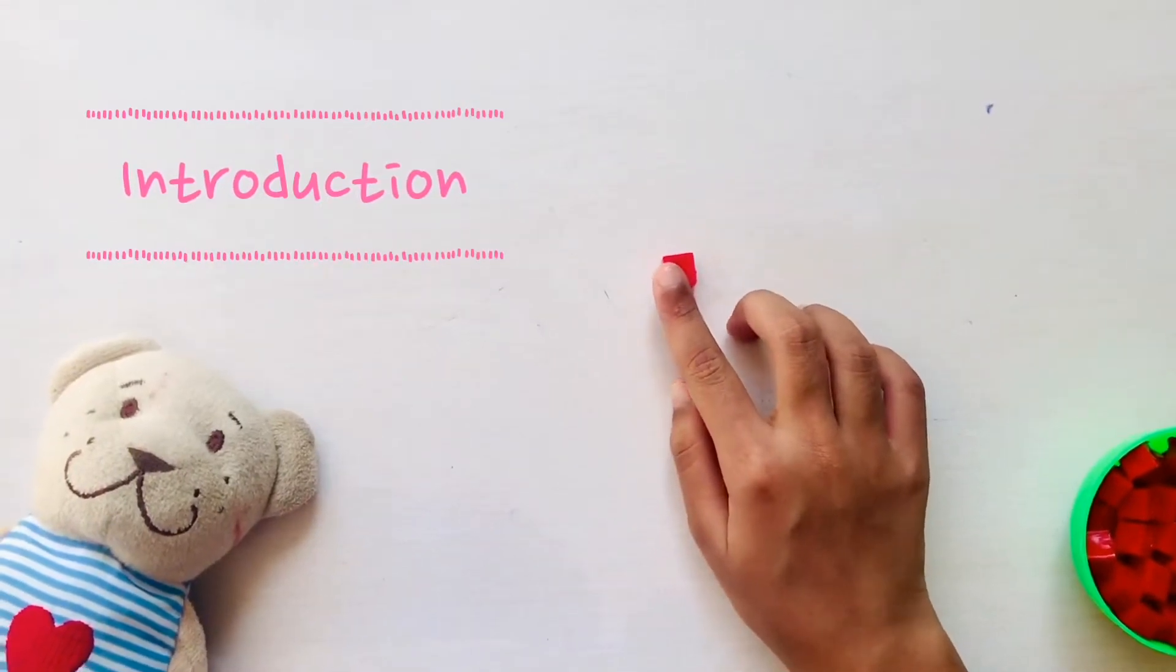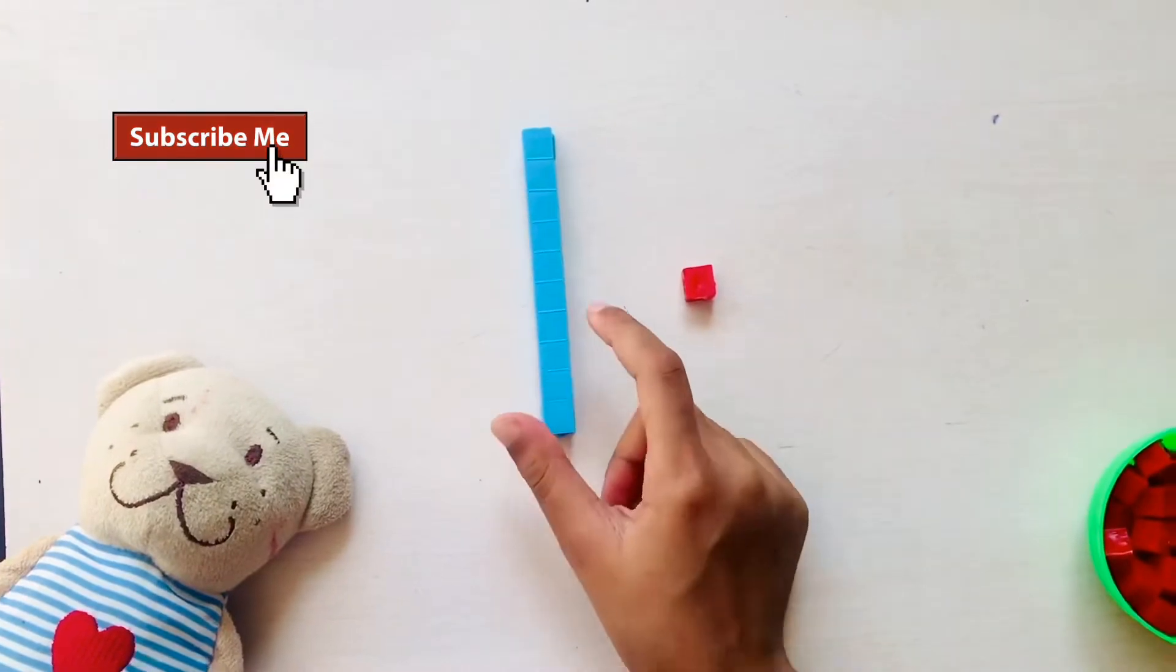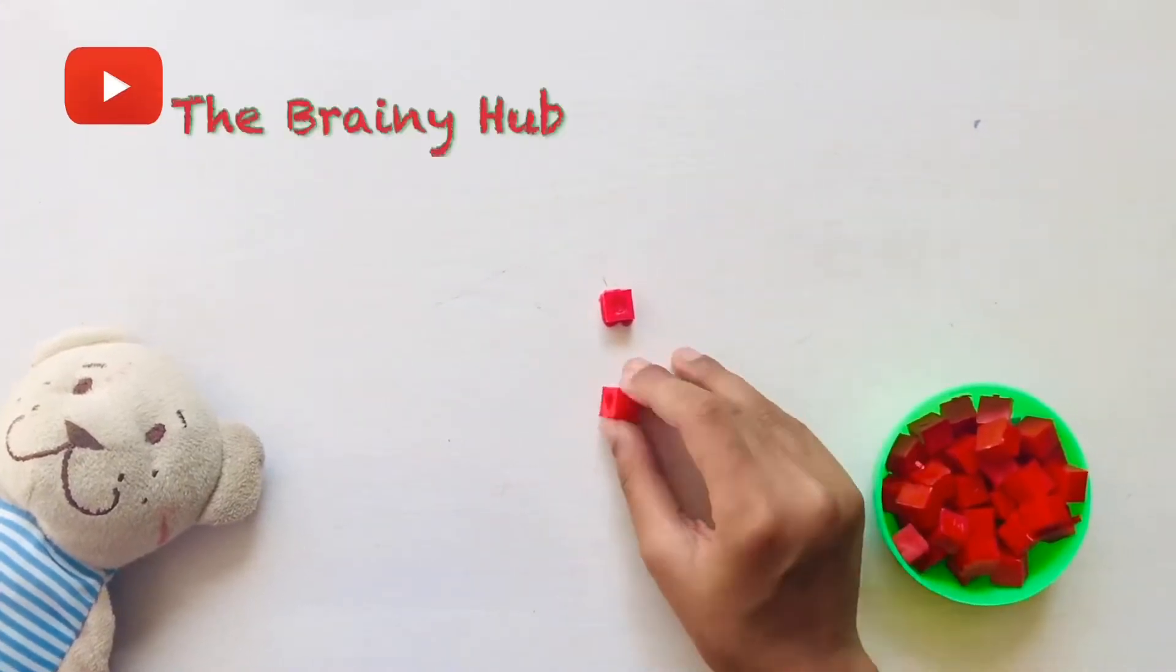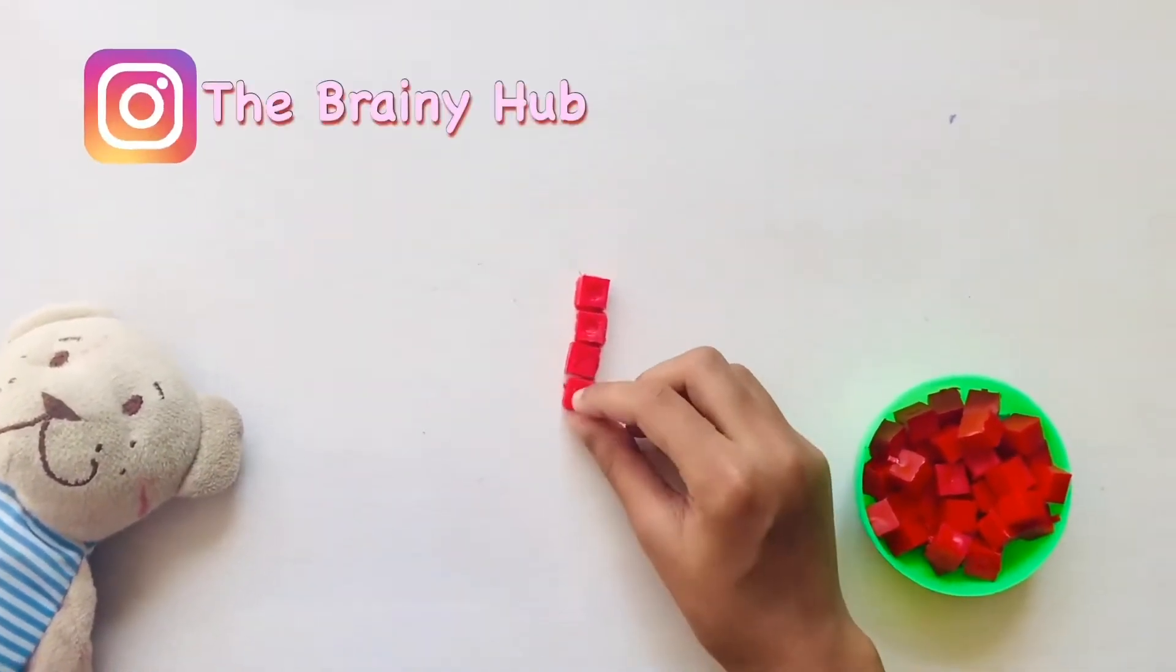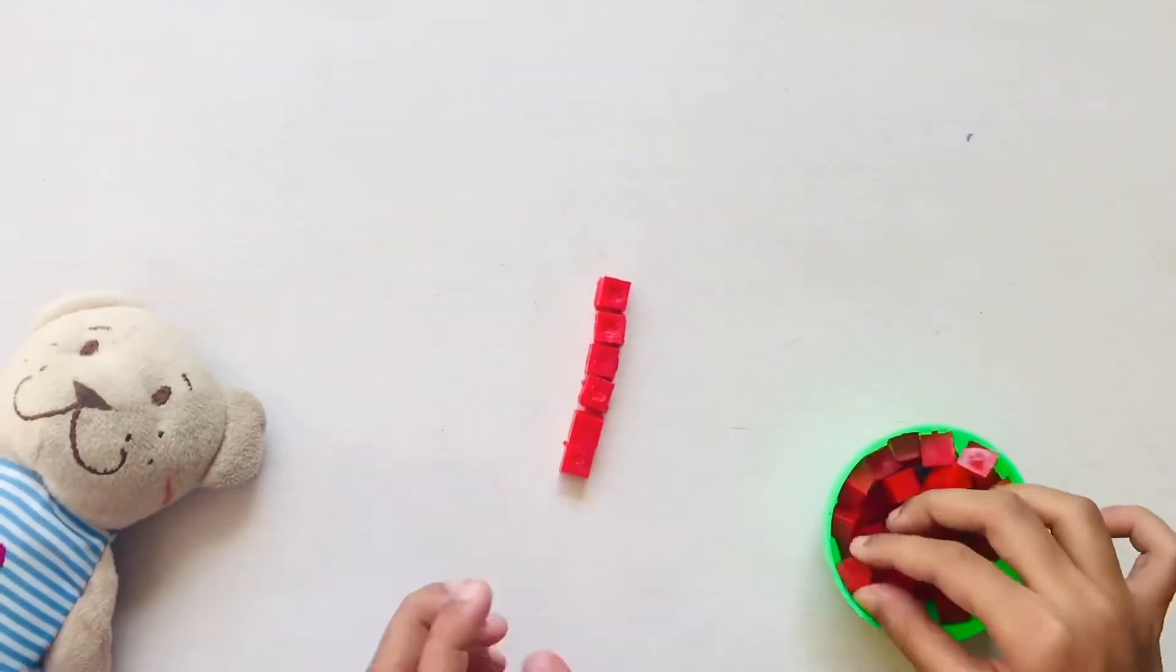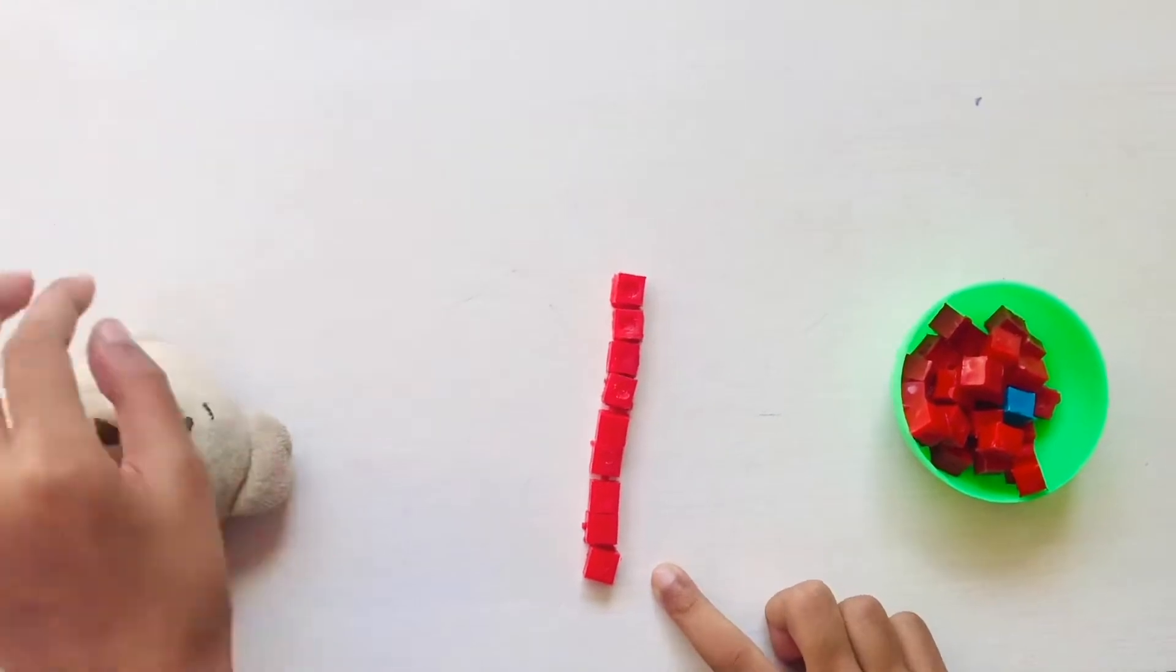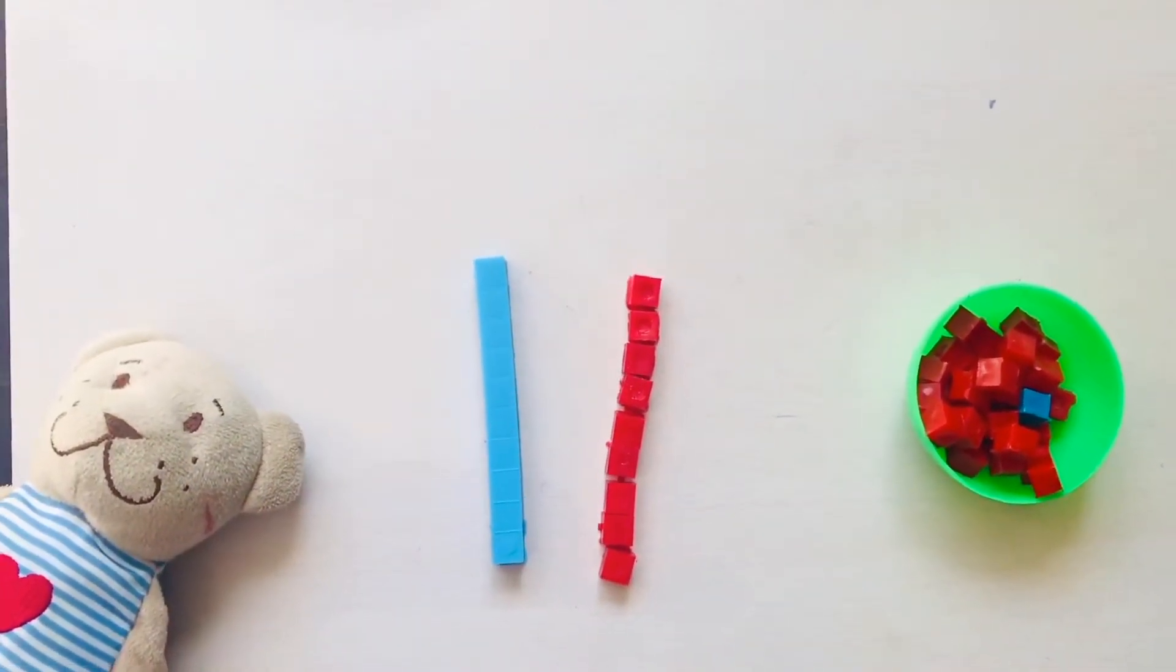This is a unit and this is a tens bar. We are going to make a tens bar. We place the units first. 1, 2, 3, 4, 5, 6, 7, 8, 9. And after 9, we don't place a unit because it makes 10. So we place a tens bar.